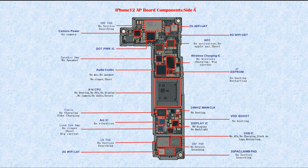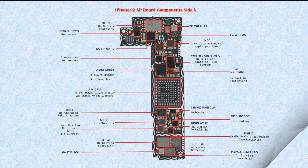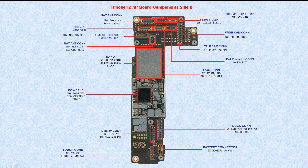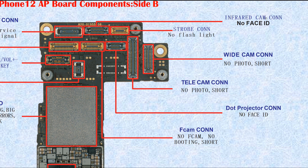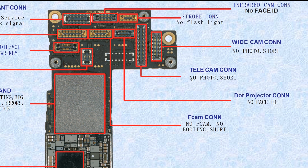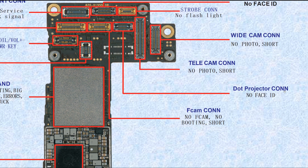That's all for side A of the AP board. Now let's look at side B. Looking from this side, there are many connectors. This one is the infrared camera connector — if broken, it causes no Face ID. This one is the strobe connector — if broken, it causes no flashlight. This one is the wide camera connector — if broken, it causes no photo or short. This one is the tele camera connector — if broken, it causes no photo or short.